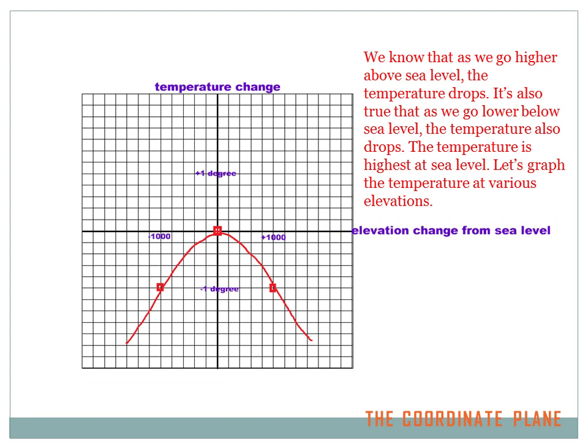Now you're probably asking yourself: what value does any of this have? Why would I want to plot a point or a line on a coordinate plane? Let me give you a practical example. We know that as we go higher above sea level, the temperature drops. We also know that as we go lower below sea level, the temperature drops. If we're in a submarine 1,000 feet below sea level, it's going to be colder. And if we're in an airplane 1,000 feet above the ground, the temperature is going to be colder than it was at the ground.